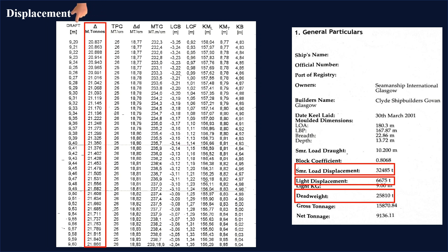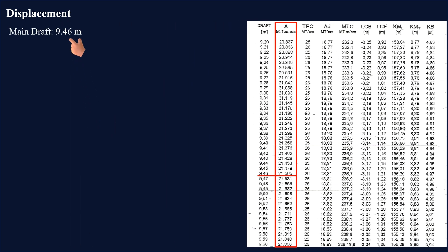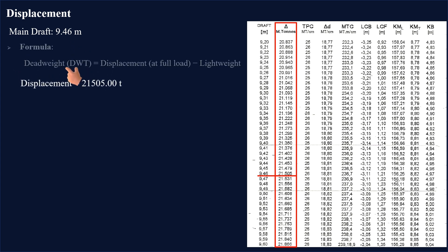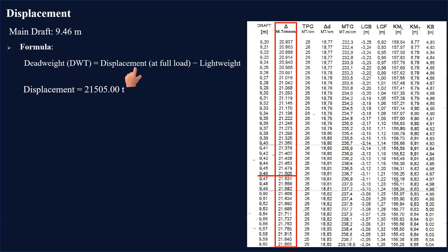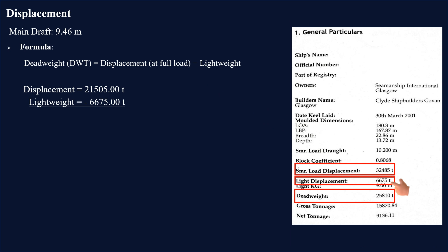Let's assume the ship's present draft is 9.46 meters when floating in salt water. Her present displacement is 21,505 metric tons. Looking at the formula for dead weight — displacement minus lightweight — if we subtract the ship's lightweight of 6,675 tons, the difference is the total weight being loaded on board, which is 14,830 metric tons.